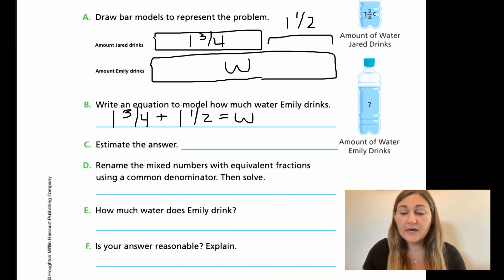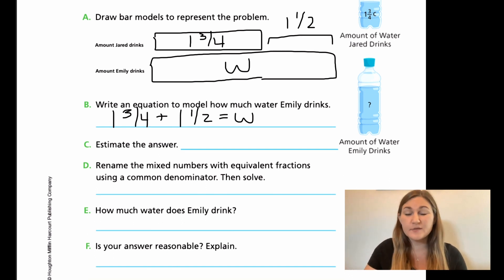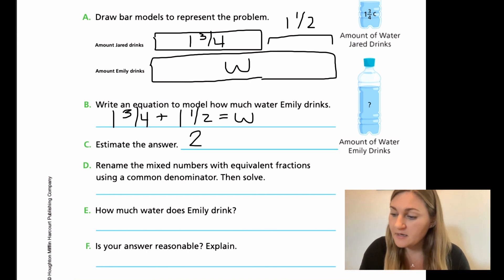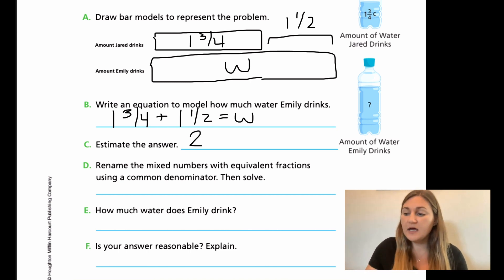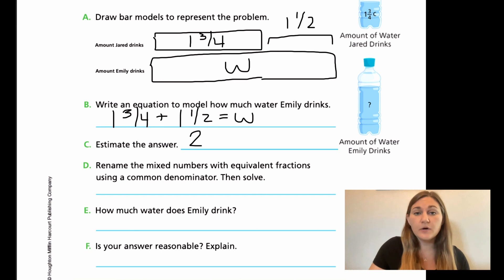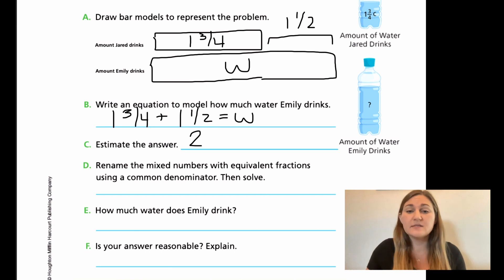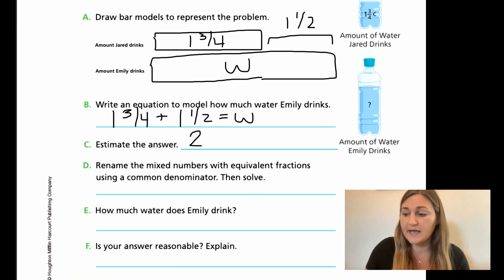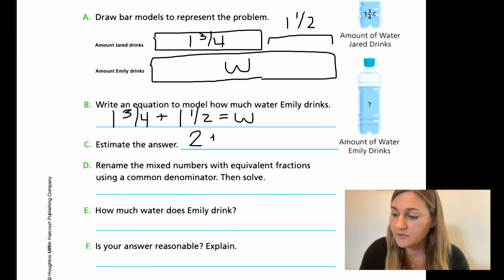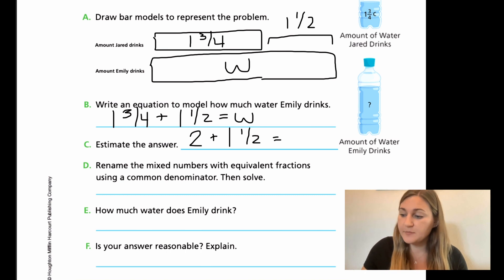For C, we want to estimate our answer. One and three fourths is close enough to two for me to estimate. Because my one and a half is right in the middle, I'm going to keep it as one and a half because I can add that pretty easily. So two plus one and a half would be three and a half.